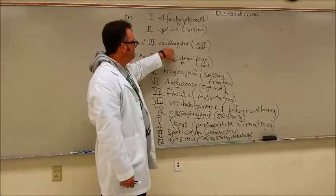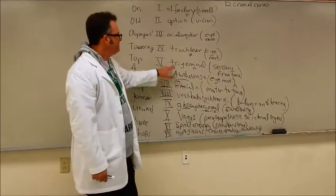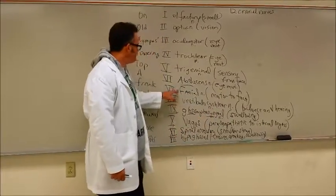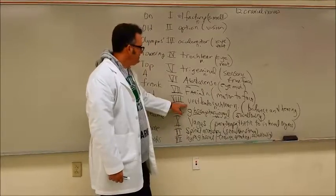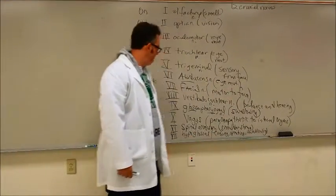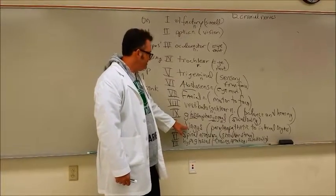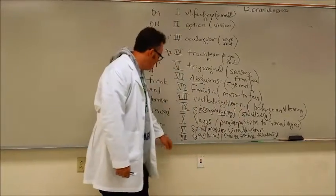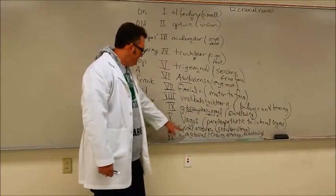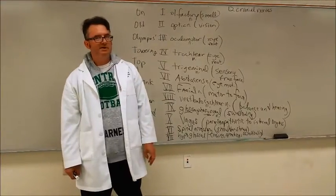Three. Oculomotor nerve. Eye movement. Four. Trochlear nerve. Eye movement. Five. Trigeminal. Sensory from the face. Six. Abducens. Eye movement. Seven. Facial. Motor to the face. Eight. Vestibulocochlear nerve. Balance and hearing. Nine. Glossopharyngeal. Swallowing. Ten. Vagus. Parasympathetic, internal organs. Eleven. Spinal accessory. Shoulder shrug. Twelve. Hypoglossal. Chewing, speaking, and swallowing. Twelve cranial nerves. That's kind of a basic throwdown right there.